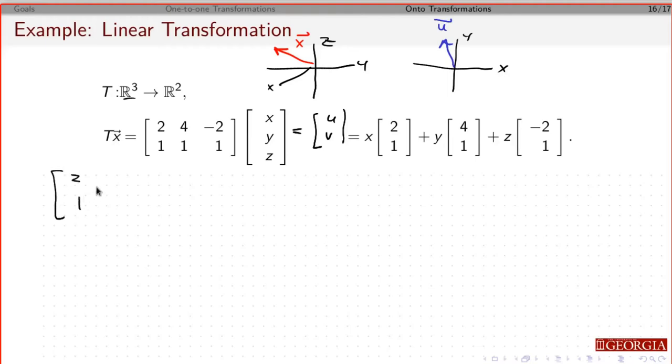If I go to solve this, I'm going to have the first column is 2, 1, the second column is 4, 1, the third column is minus 2, 1 is equal to uv. And again, I'm just going to tell you what I've got. I put this in reduced row echelon form earlier. I've got 1, 0, 3 is 2v minus u over 2, and 0, 1 minus 2 is u over 2 minus v.